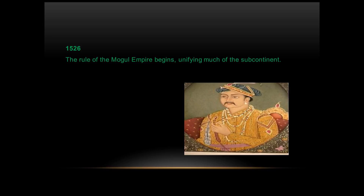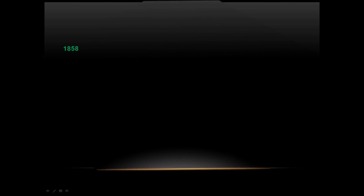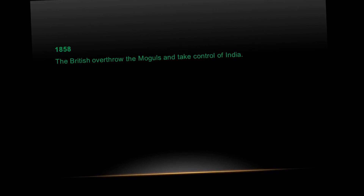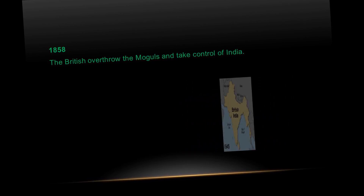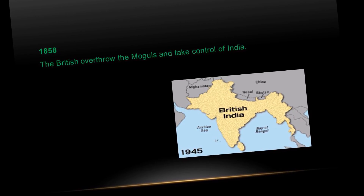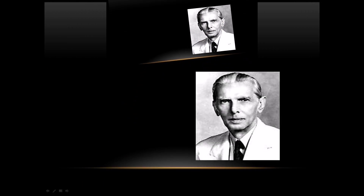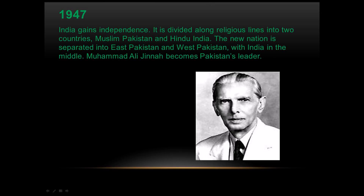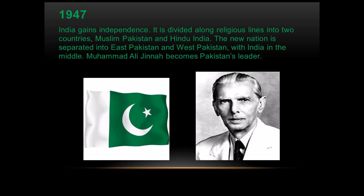In 1526 AD, the rule of the Mughal Empire began, unifying much of the subcontinent. In 1858, the British overthrew the Mughals and took control of India. Then in 1947, India gained independence. It was divided along religious lines into two countries: Muslim Pakistan and Hindu India. The new nation was separated into East Pakistan and West Pakistan, with India in the middle. Muhammad Ali Jinnah became Pakistan's leader.